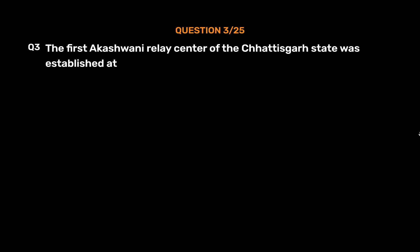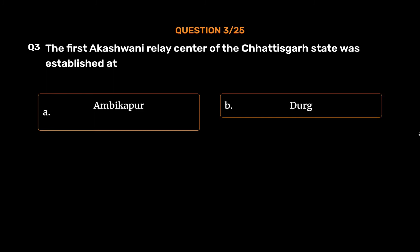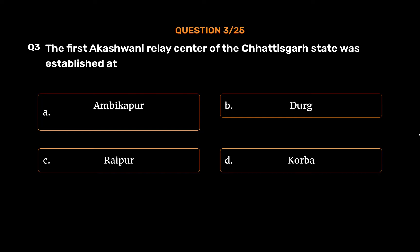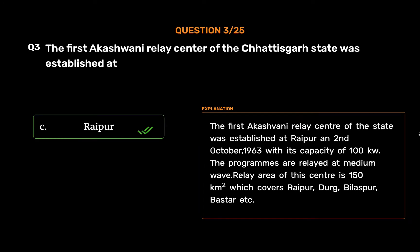Question No. 3: The 1st Akashwani Relay Center of Chhattisgarh State was established at — Option A: Ambikapur. Option B: Durg. Option C: Raipur. Option D: Korba. The correct answer is Option C: Raipur. The 1st Akashwani Relay Center of the state was established at Raipur on 2nd October 1963 with a capacity of 100 kW. Programs are relayed at medium wave. The relay area of this center is 150 square kilometers, covering Raipur, Durg, Bilaspur, Bastar, etc.